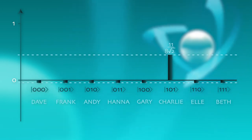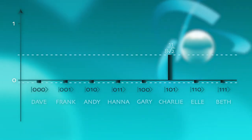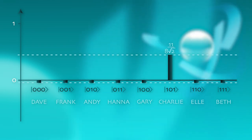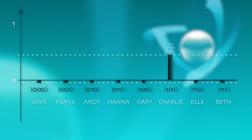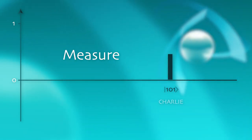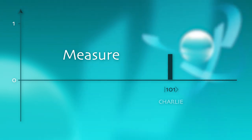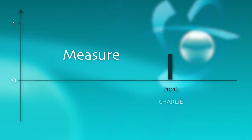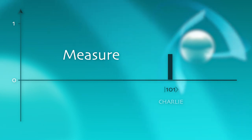If I repeat the sequence just one more time the amplitude is almost completely concentrated on the 101 code, so that if I measure my register of qubits after these two steps I will find the 101 code with about 95% probability. Classically I would have needed four attempts to find that code with better than 50% probability.